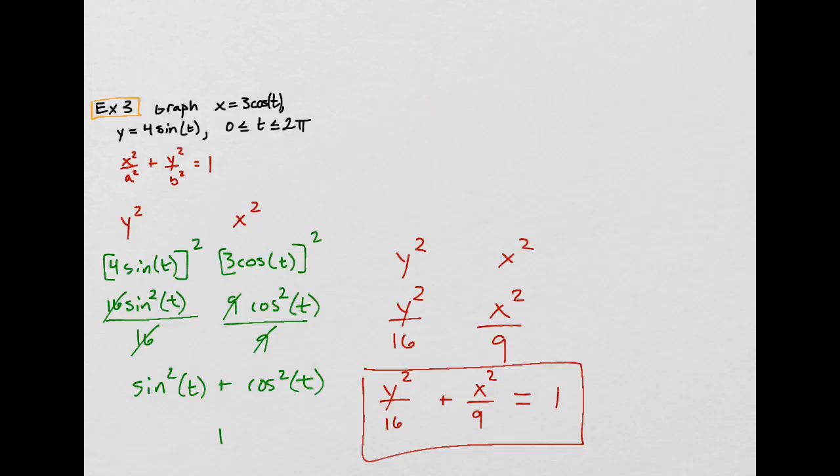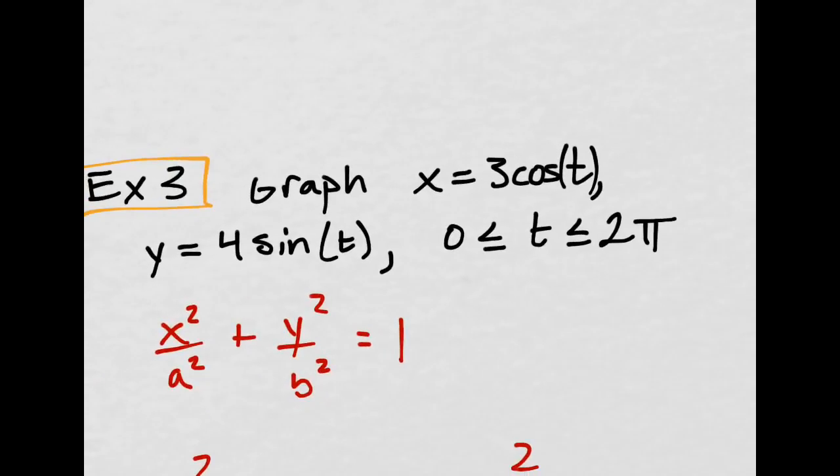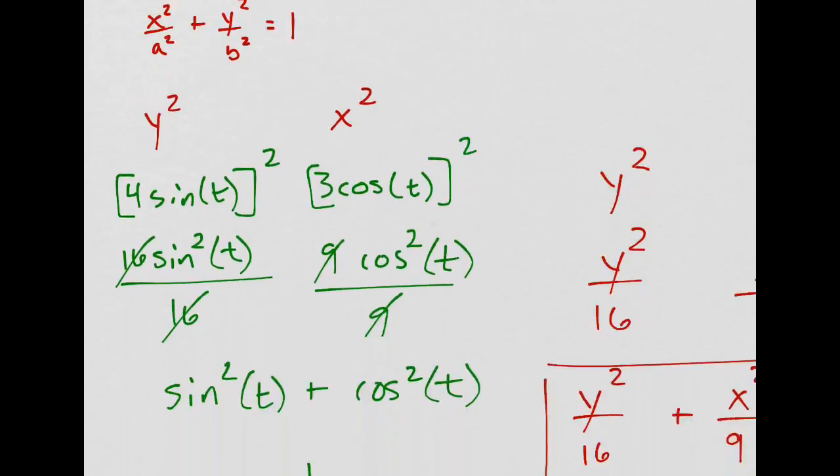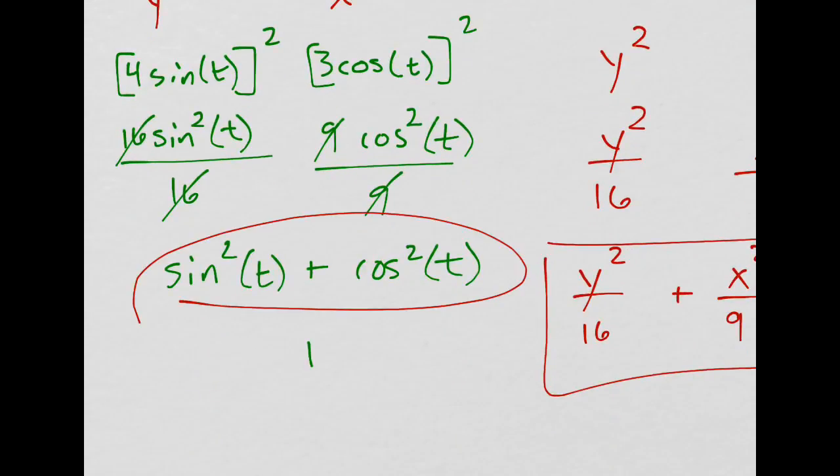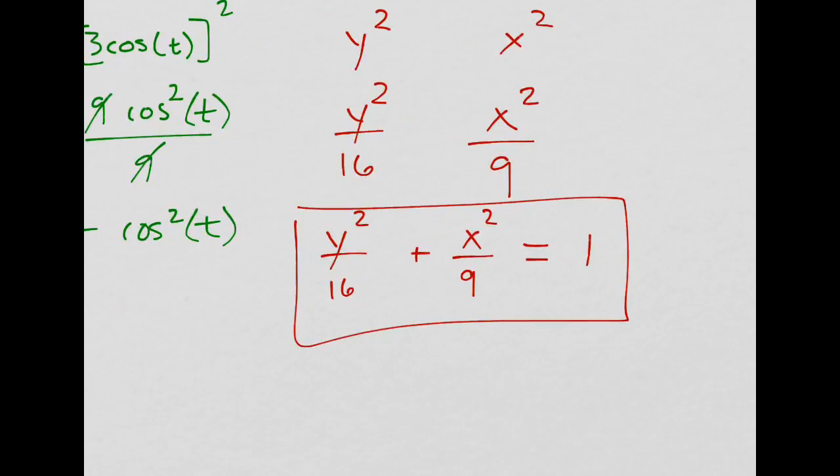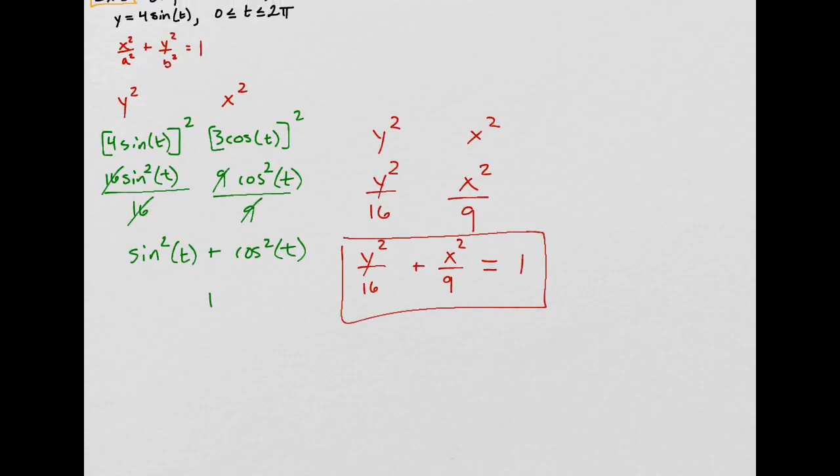So any time you're given parametric equations with sine and cosine, perhaps one of the tricks is to use the Pythagorean trigonometric identity, and then it helps you convert it to a Cartesian equation. All right, I'm going to be done with this, goodbye.